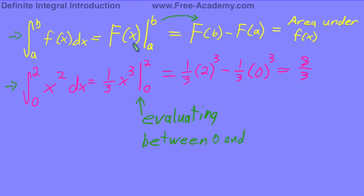So F(x), which is of course the integral of little f(x), evaluated from a to b equals f(b) minus f(a). That's our area under the curve. In the case of x squared from 0 to 2, that will give us an area of eight-thirds.